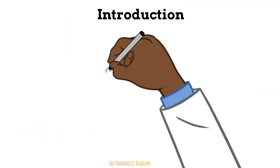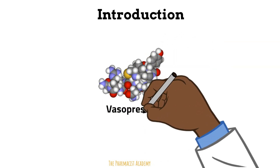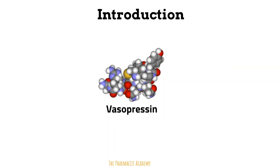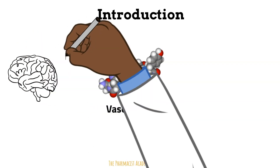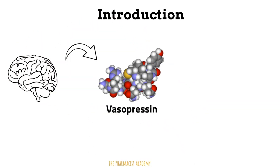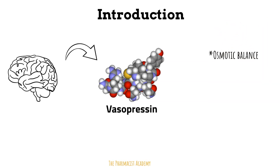Before we dive into the differences between the two, let's learn a little bit more about vasopressin. So vasopressin, also known as the antidiuretic hormone, is released by the hypothalamus. It basically retains water — it's the opposite of a diuretic. So it has several functions, one being osmotic balance.